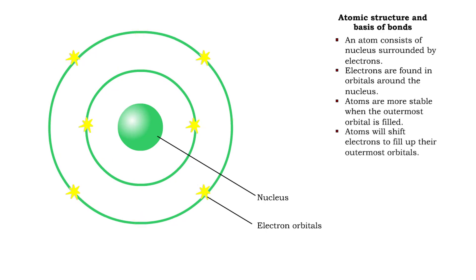If an atom's outermost orbital is not filled, electrons will move to fill this shell.